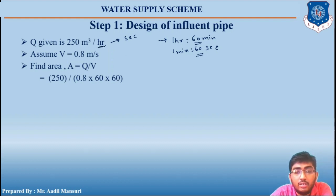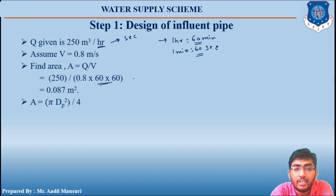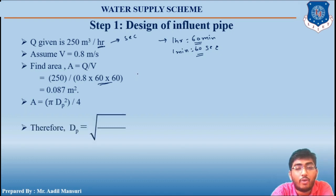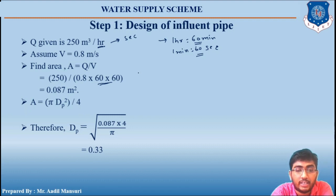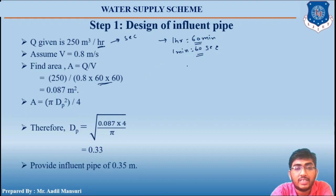Since the hour is in the denominator, we multiply by 60 × 60. So A = 250 divided by (0.8 × 60 × 60) = 0.087 square meters. Using A = (π/4) × dp², we get dp = √(0.087 × 4 / π) = 0.33 meters. Since no standard pipe of 0.33 m diameter is available, we round up and provide an influent pipe of 0.35 meter diameter.